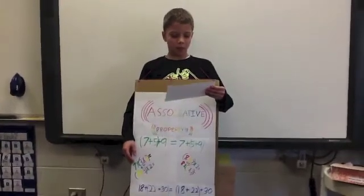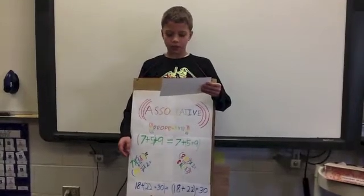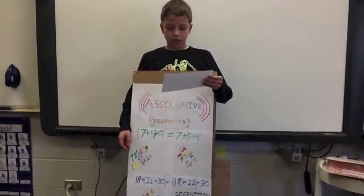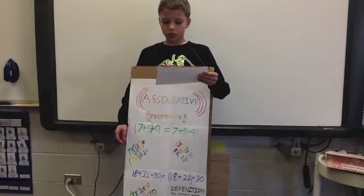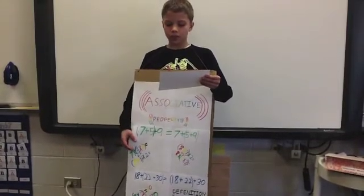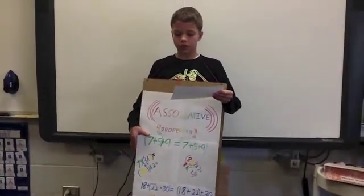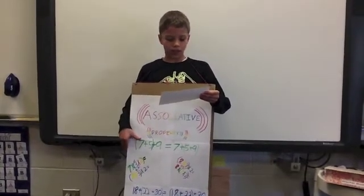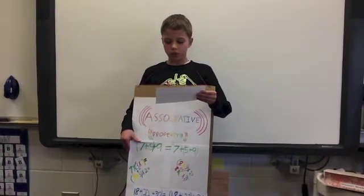Do you know what associative property is? Associative property is changing the grouping of 3 or more numbers, and the grouping does not change the product. For example, 2 times 8 times 3 — if you put 2 times 8 in parentheses, it will still equal the same product. And if you put 8 times 3 in parentheses, it will still equal the product, which is 48. Without associative property, we won't be able to group numbers in math.